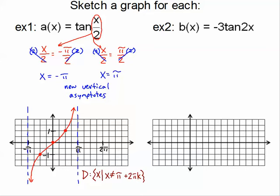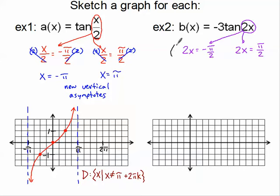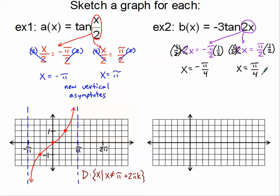Example 2: we have another tangent graph. I'm going to take the quantity 2x and set it equal to negative pi over 2, and also equal to positive pi over 2 — same as example 1. Solving: I'll multiply by one half. I get x equals negative pi over 4. Doing the same on the other side, x equals positive pi over 4. Here are my 2 new vertical asymptotes.